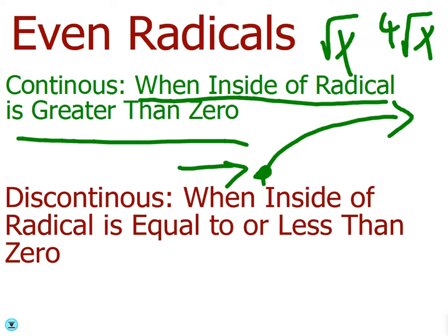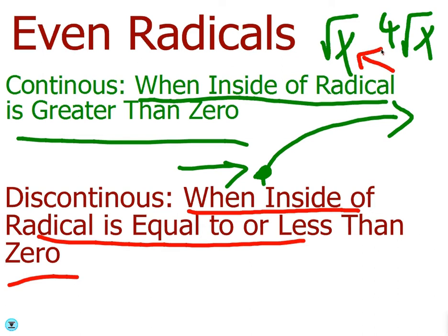It's going to be discontinuous when the inside of the radical is equal to zero. For example, at the square root of x, it's discontinuous at zero, because at that point, that's where the graph ends. It's an endpoint. It's not continuous there.